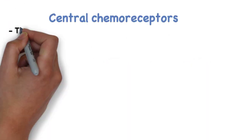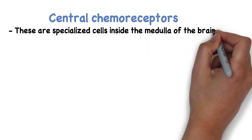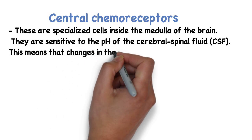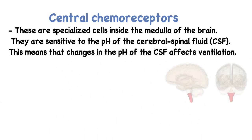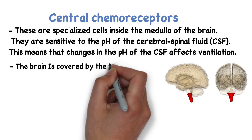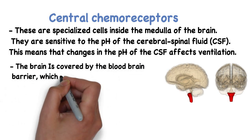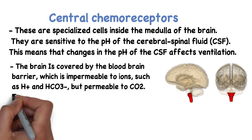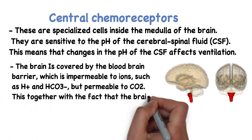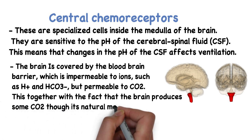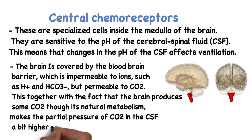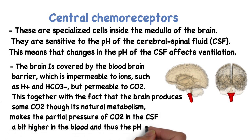Central chemoreceptors are specialized cells in the medulla of the brain. They are sensitive to the pH of the cerebrospinal fluid, meaning that changes in CSF pH affect ventilation. The blood-brain barrier is impermeable to ions such as H+ and HCO3-, but permeable to CO2. Combined with the fact that the brain produces some CO2 through its natural metabolism, the partial pressure of CO2 in the cerebrospinal fluid is slightly higher than in the blood, and thus the pH slightly lower.